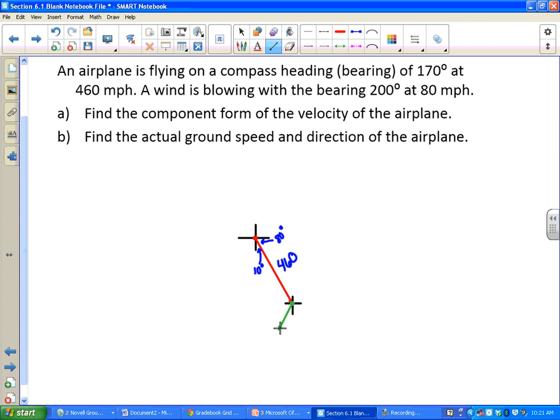The important part of the angles here is that this angle, I went around 180 plus 20 to get 200, so that one's 20 degrees, and on this side that is 70 degrees. And then that vector is 80 miles per hour.